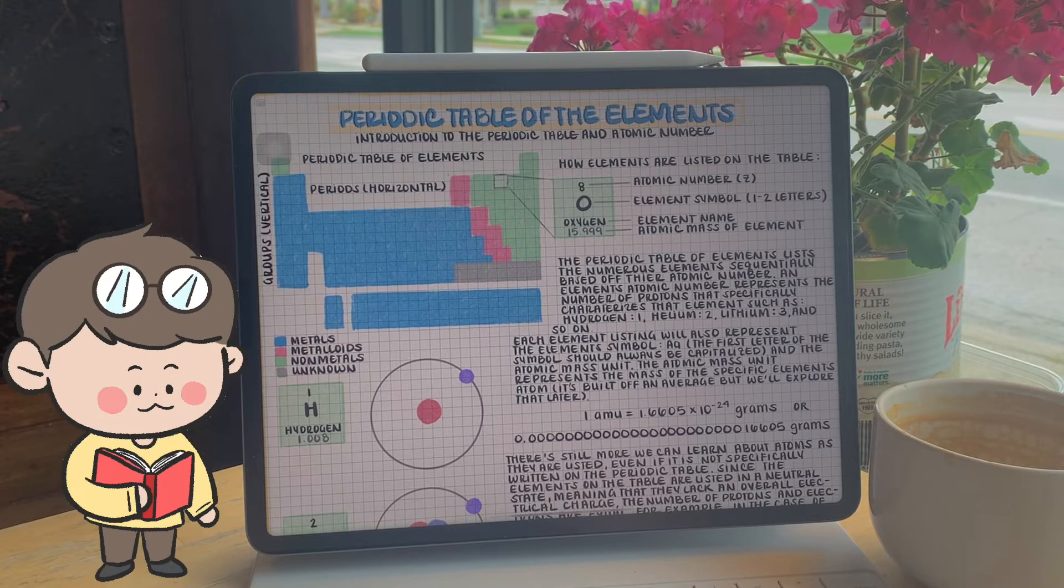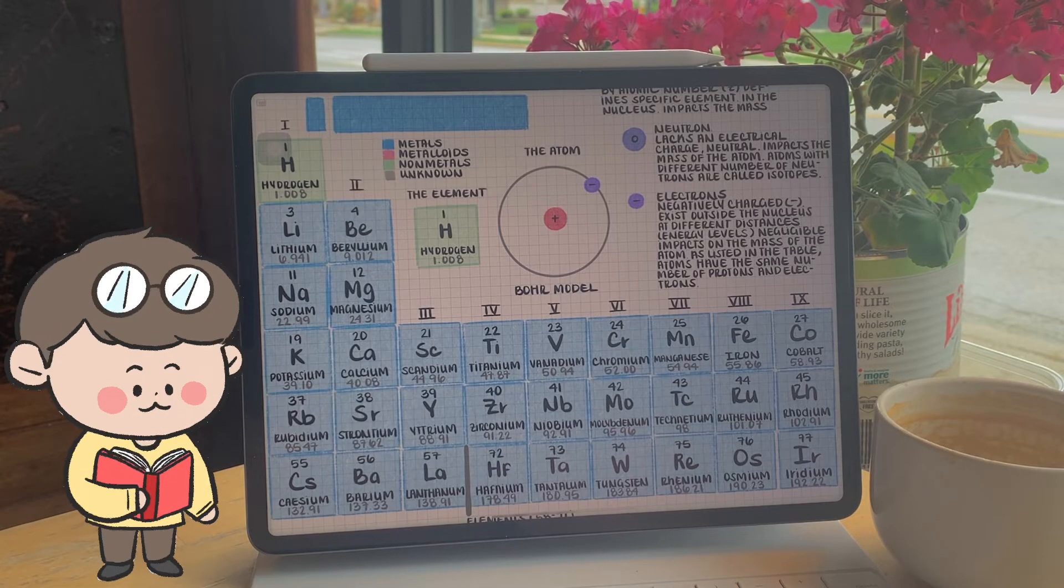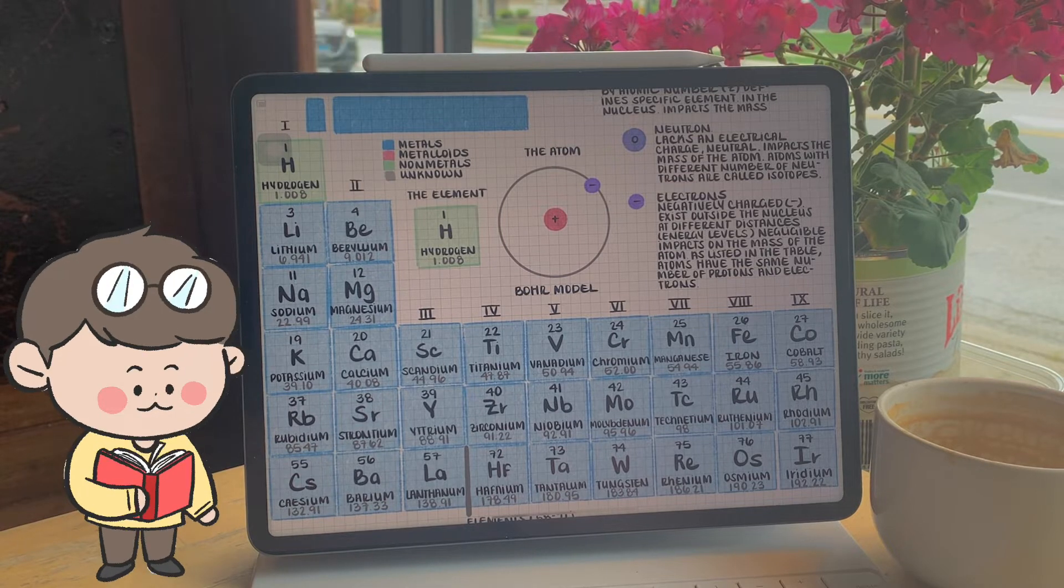such as hydrogen has one proton, helium has two, lithium has three, and so on. It's the characterizing factor of a specific element.